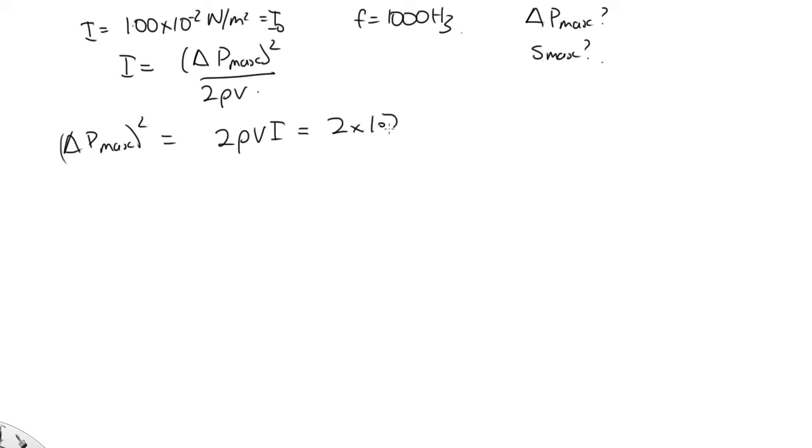Now, this is air, so the density is 1.2. You'd be given this on the formula sheet. The velocity of sound in air, we usually take the standard values, 343. And then the intensity, 1.00 times 10 to the minus 12. Solving that on the calculator, we end up with 2.87 times 10 to the minus 5 pascals.